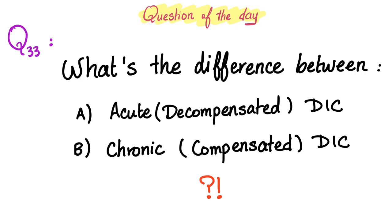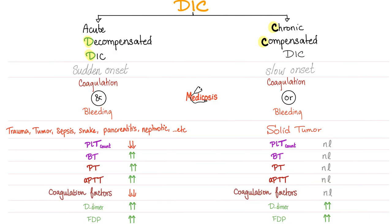Let me answer the question of the previous video: what is the difference between acute decompensated DIC and chronic DIC? Acute DIC has a sudden onset; chronic DIC has a slow onset. In acute DIC, we have coagulation and bleeding at the same time — we call it a thrombo-hemorrhagic disorder. In chronic compensated DIC, we have coagulation or bleeding.